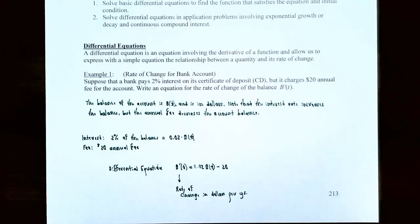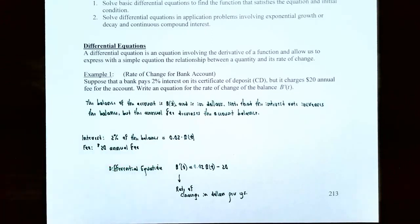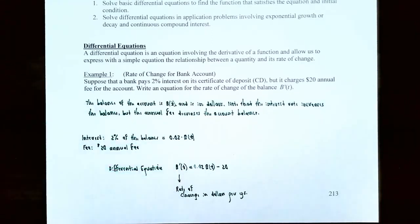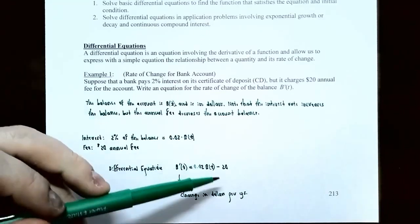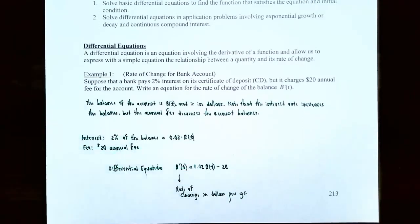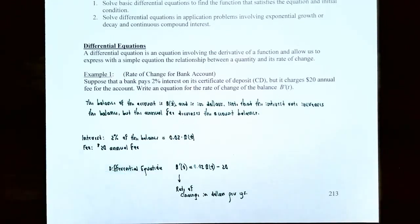Since the interest is 2%, each year 0.02 times capital B of T is the interest earned. The fee is $20 every year, so we subtract that. Capital B prime of T, the rate of change in the balance, is given as 0.02 times capital B of T minus 20. That's the rate of change in the balance of the account in dollars per year. Since this equation involves the first derivative, it's called a first order differential equation.